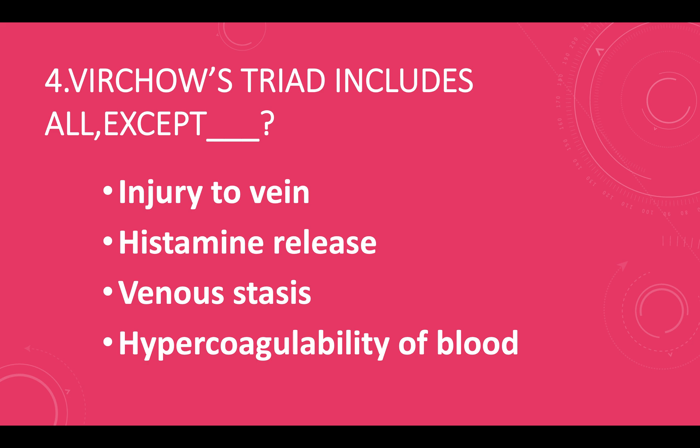Virchow's triad includes all except: option A — injury to vein, option B — histamine release, option C — venous stasis, option D — hypercoagulability of blood. Answer: option B, histamine release.